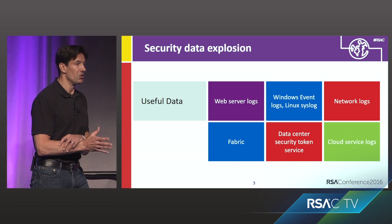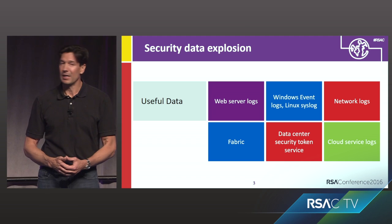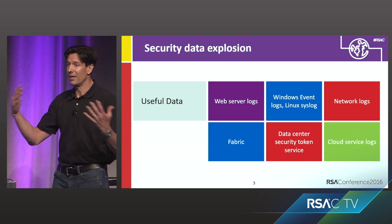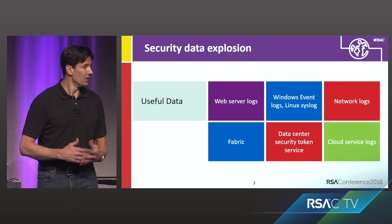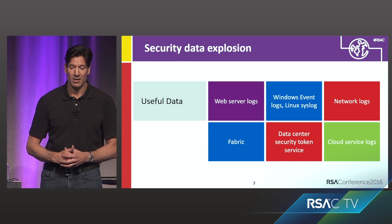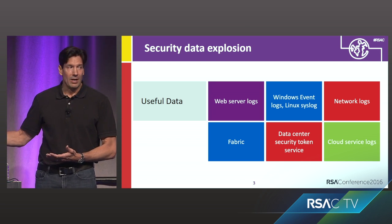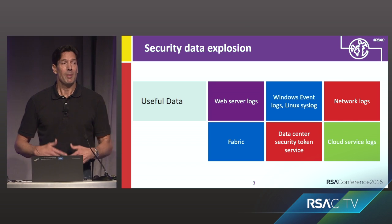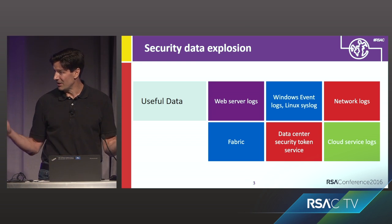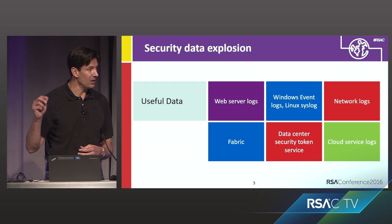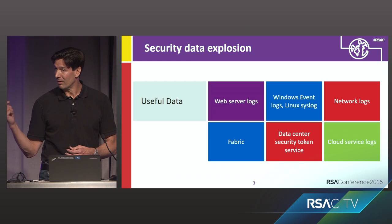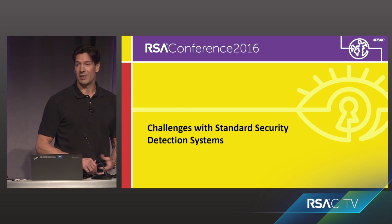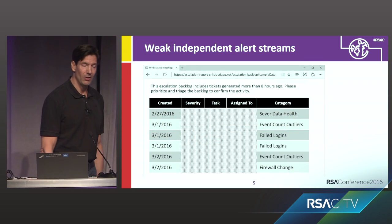We also have another challenge — and this one is not unique to us, it's common to everybody here — you've got dozens of disparate sources of data you have to collect and get a unified view of. We've got server logs, Windows event logs, Linux syslogs, cloud logs emitted by our infrastructure services, and Azure Active Directory logs. Typically, the only way to determine that something is anomalous is by doing correlations across those different kinds of activities.